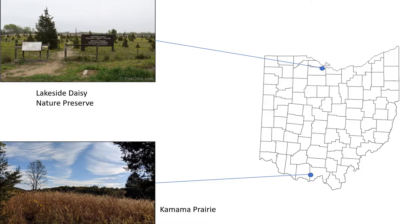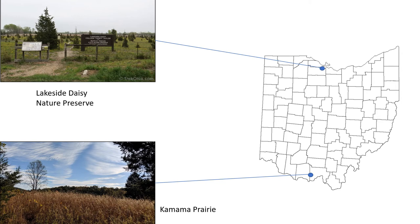As of now I have two field sites: one near Sandusky at the Lakeside Daisy Nature Preserve and one in the south of the state called Kamama Prairie. I'm hoping to add a third near Columbus called Prairie Oaks Metropark. I'm very fortunate to have permits for all of my sites, and they're all very undisturbed by humans, so I can observe foraging without human interference and without birds being spooked by people hiking through.